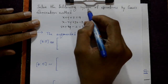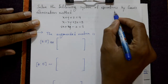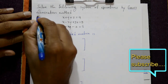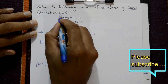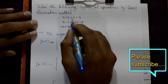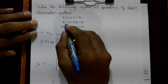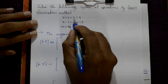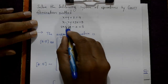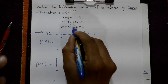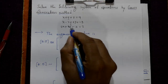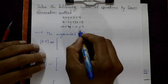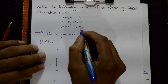Solve the following system of equations by Gauss elimination method. Three equations are given: x plus y plus z is equal to 9, x minus 2y plus 3z is equal to 8, and 2x plus y minus z is equal to 3.